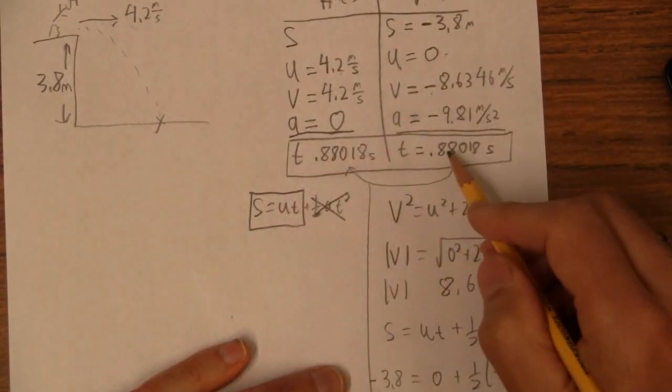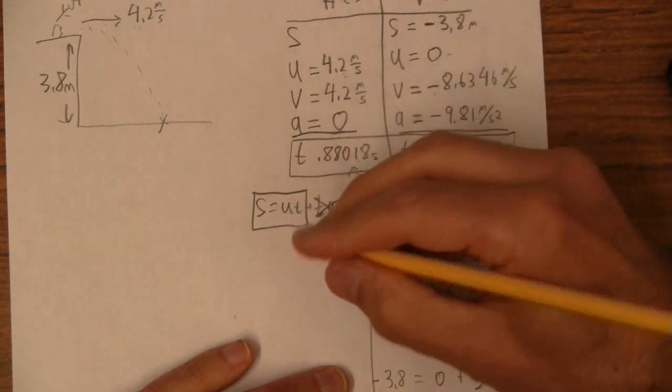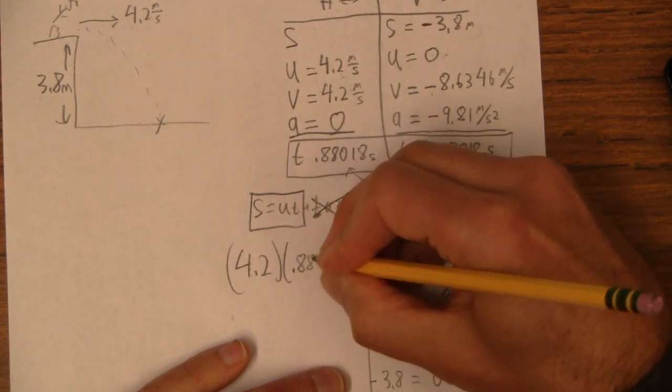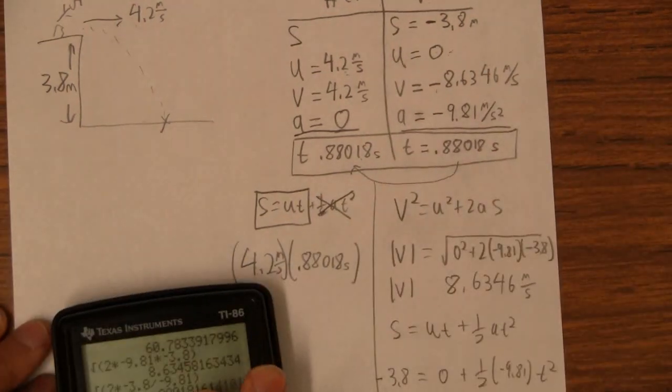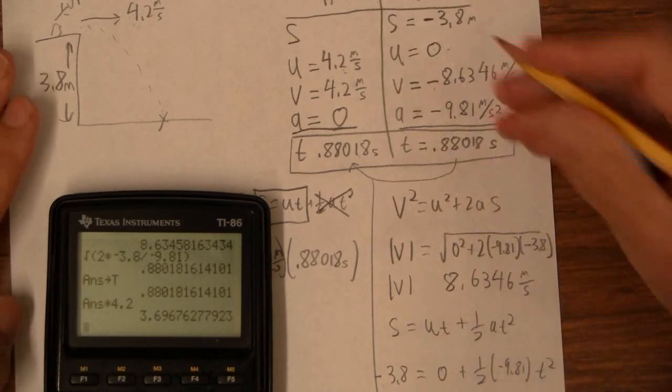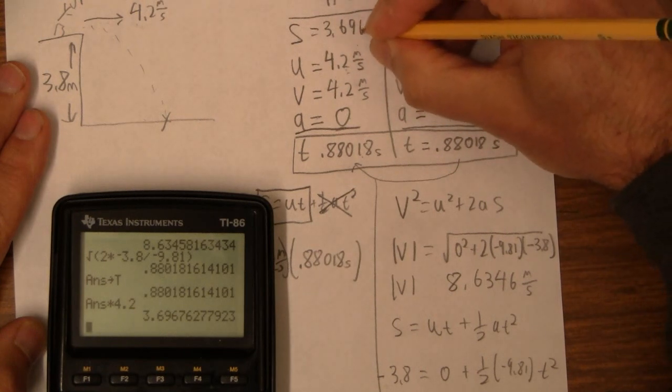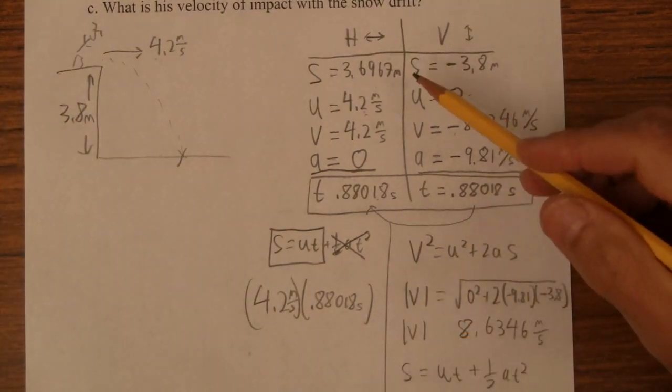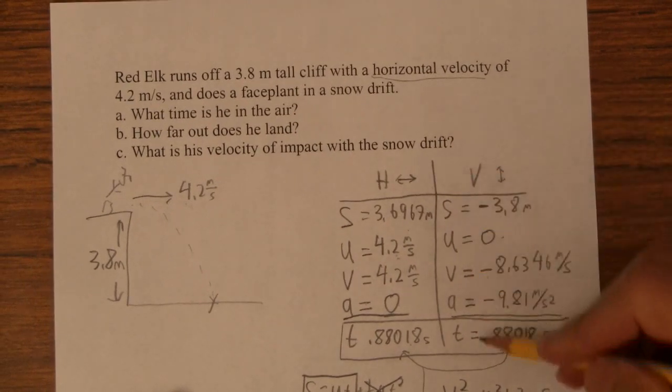To figure out how far he goes, I'm going to use this time it took him to hit the ground, multiply by that velocity, and get the displacement. So that equals 4.2 times 0.88018 seconds. And this is meters per second. So I'm just going to go times 4.2, and I get 3.6967 meters. So now I've got, I've filled this whole table, and now it's time to answer the question.